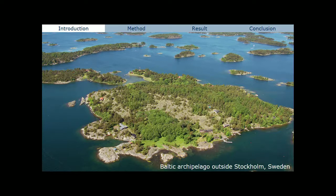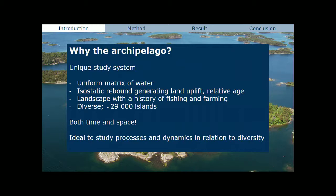In this area, isostatic rebound generates land uplift, giving the relative age of the islands. It's a landscape with a history of fishing and farming. It's also very diverse — over 29,000 islands ranging from very small skiers to quite large islands — ideal to study processes and dynamics in relation to diversity.